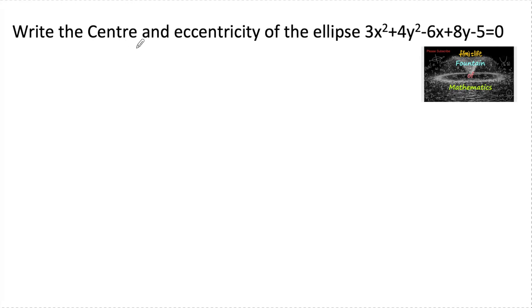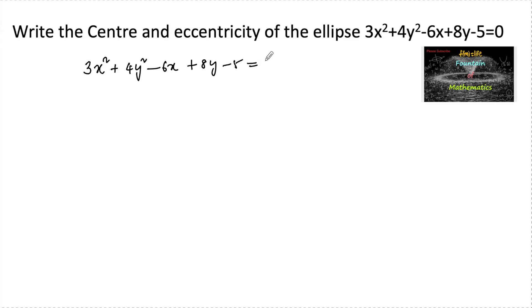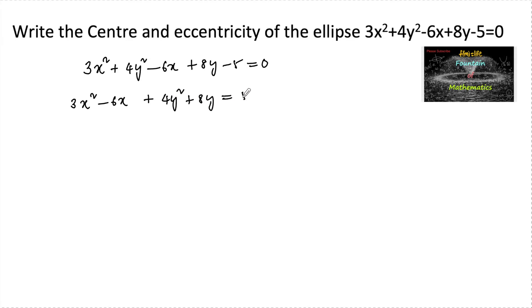Write the center and eccentricity of the ellipse 3x² + 4y² - 6x + 8y - 5 = 0. So let us write this in standard form: 3x² - 6x + 4y² + 8y = 5.